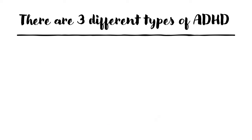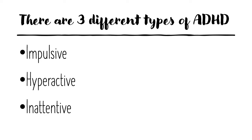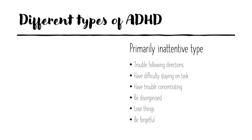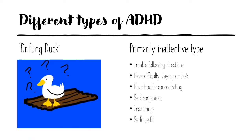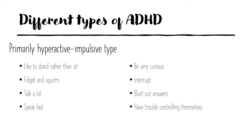There are three different types of ADHD: impulsive-hyperactive, and inattentive. These can present in three different ways. First, there is the primarily inattentive type, sometimes called the 'drifting duck,' where a young person with ADHD has trouble following directions, difficulty staying on task, trouble concentrating, is disorganized, loses things, and can be forgetful.